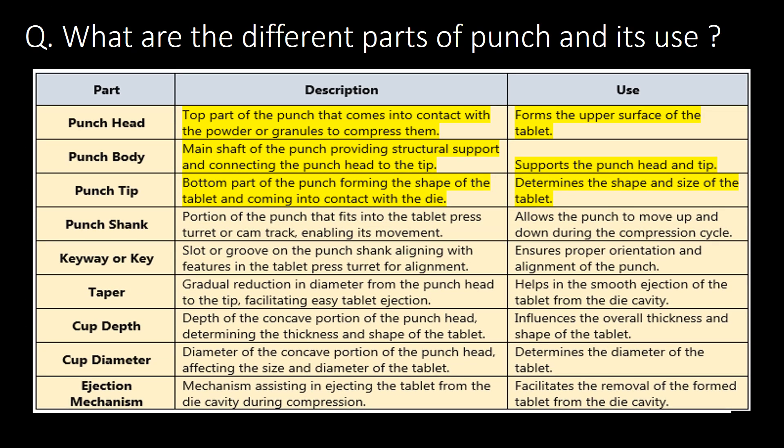What are the different parts of a punch and their uses? You can refer to the table below for different parts of a punch, their description, and use. The punch head forms the upper surface of the tablet, whereas the punch body supports the punch head and tip. The punch tip determines the shape and size of the tablet. Other important parts are punch shank, keyway, taper, cup depth, and cup diameter.